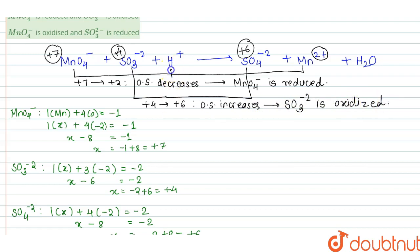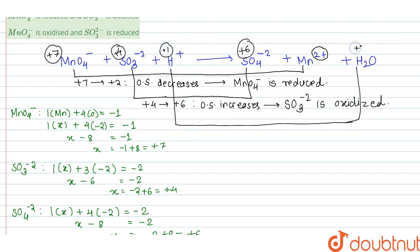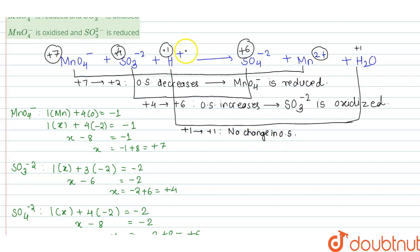The next conversion is where H⁺ is converted into H2O. Here the oxidation state of Hydrogen is +1, and in H2O it is also +1. So the oxidation state is +1 in both cases. Therefore there is no change in oxidation state, and Hydrogen is neither oxidized nor reduced.